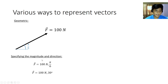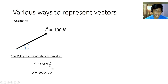We can specify the magnitude and direction this way: we write F equals 100 newtons, pi over 6. The 100 newtons is the magnitude of the vector and pi over 6 is the direction, measured from the positive x-axis. It is positive because it is measured counterclockwise towards the force. Or we can also use degrees: 100 newtons, 30 degrees.